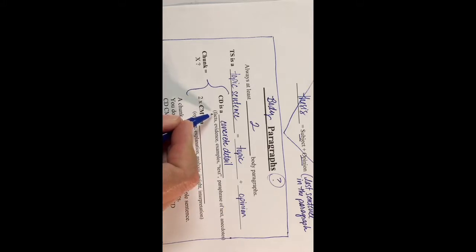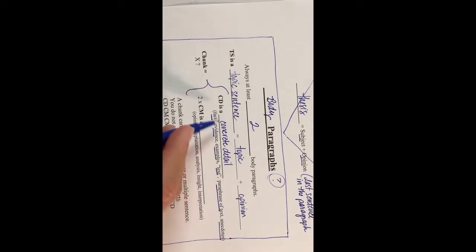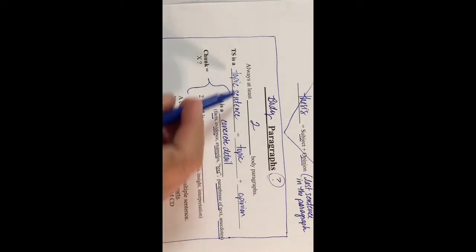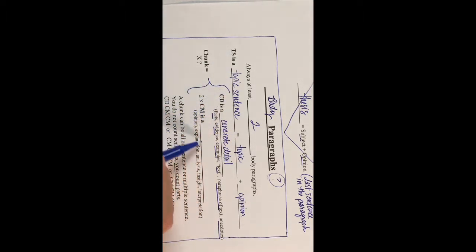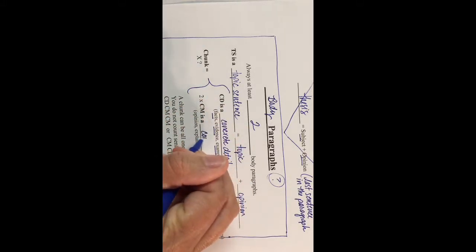On the test, the hardest thing to remember are the synonyms of concrete detail: facts, evidence, examples, text, paraphrase of text, or anecdotes. Another part of the body paragraph after the topic sentence is that then you have to talk about that concrete detail—the two CMs. CM stands for commentary.